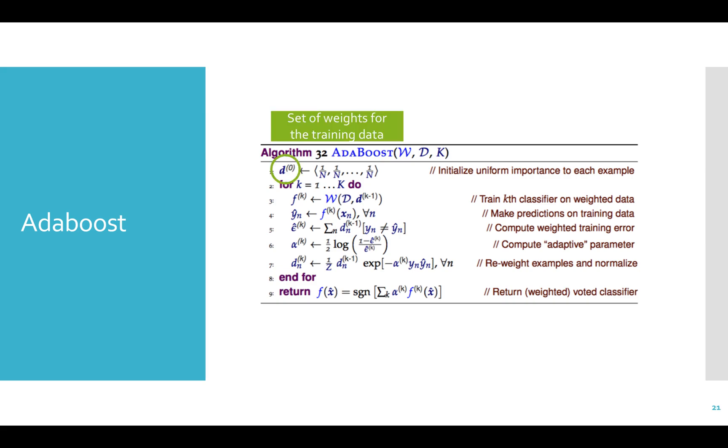Let's look at line one. We have a set of weights, lowercase d, being defined for the zeroth iteration. So we have d to the zero. D is the set of weights for the training data. Each of the samples starts off with equal weight. Since there are n samples in the training set, each sample gets a weight of 1 over n.